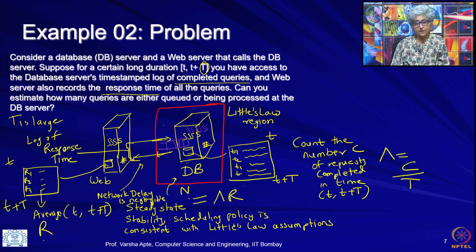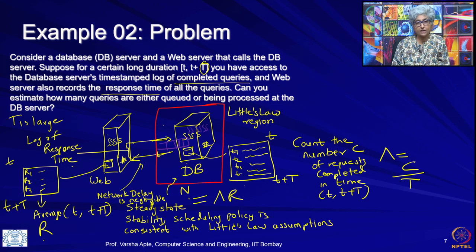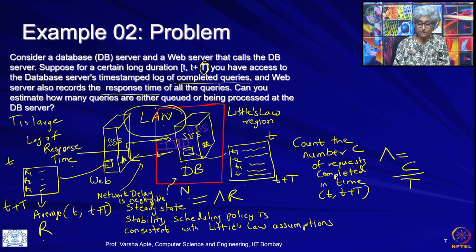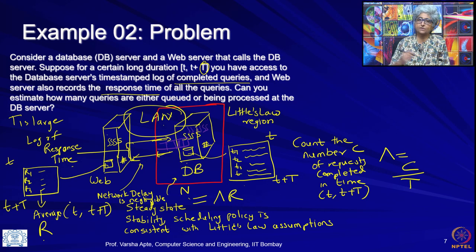We have to make some assumptions: requests are not disappearing, requests do not spawn — all the Little's law assumptions. Also, we assume the elapsed time recorded at the web server is dominated by time at the database server, and network delay is negligible. This is reasonable if the web server and database server are on the same LAN. If they are separated by a large network, our approach would not be correct and more advanced reasoning would be needed.